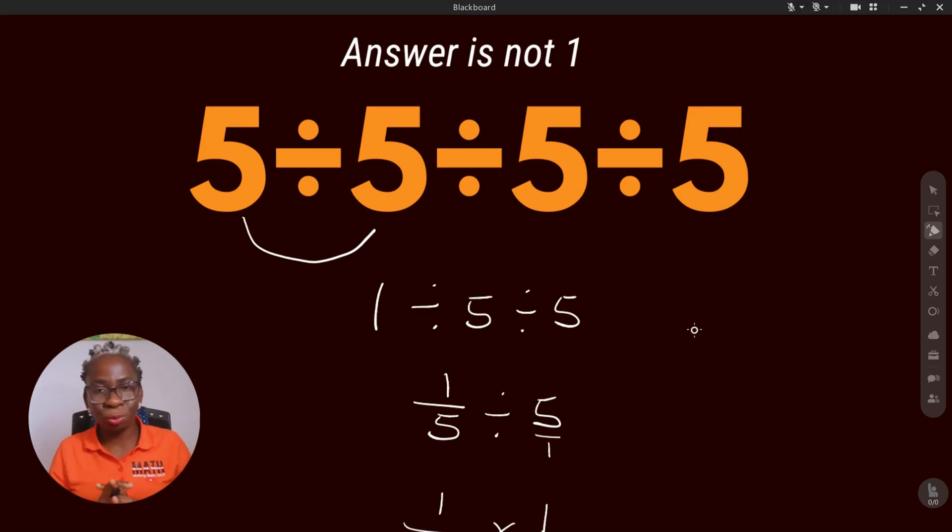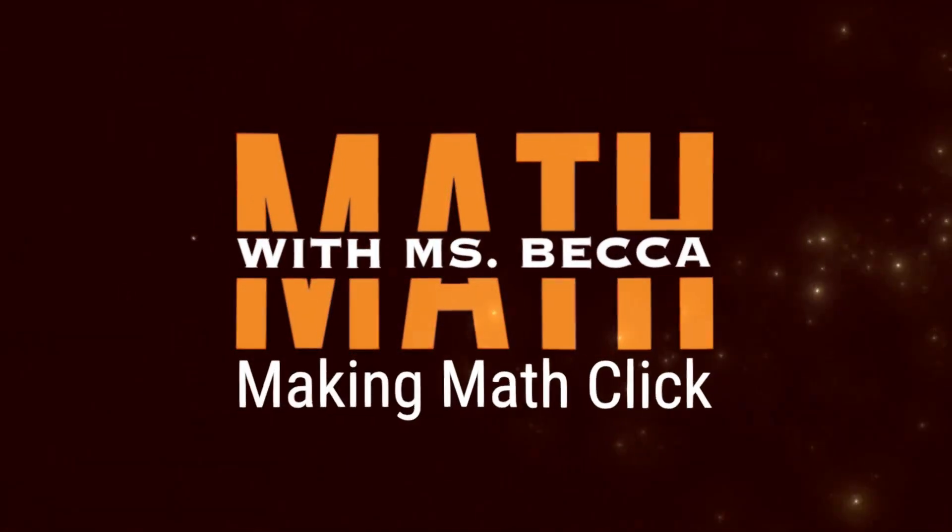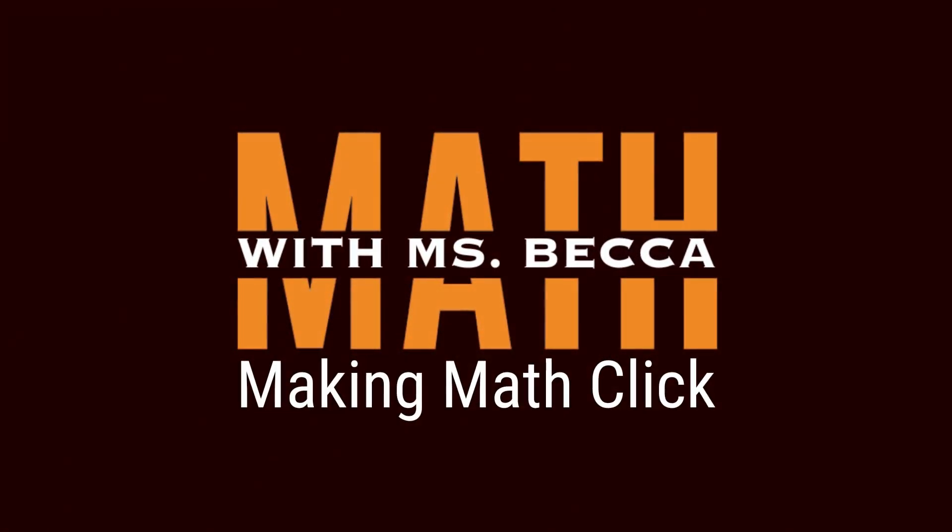If it does not have brackets, then you solve from left to right. You don't group it the way you feel it should be. You solve from left to right. Did you also get one, or did you get one over 25? Let me know in the comments.